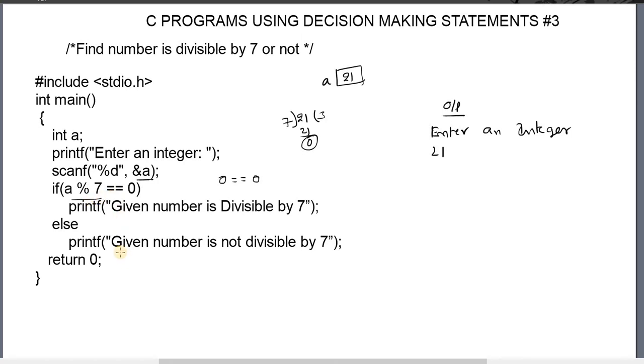If it is false, then we will get this message: given number is not divisible by 7. In this two statements, only one is executed. The if-else statement is used